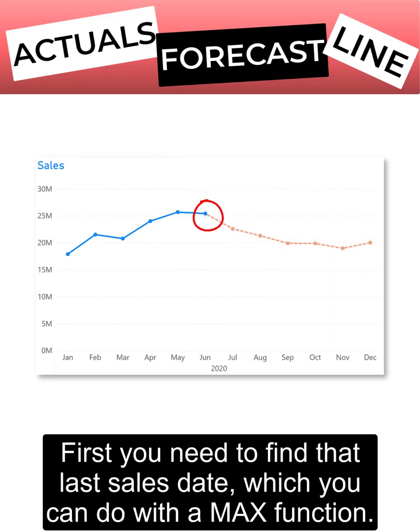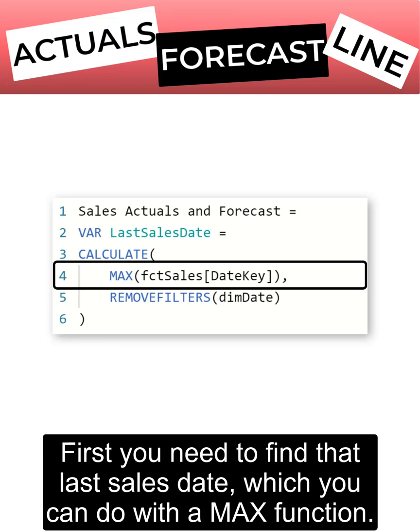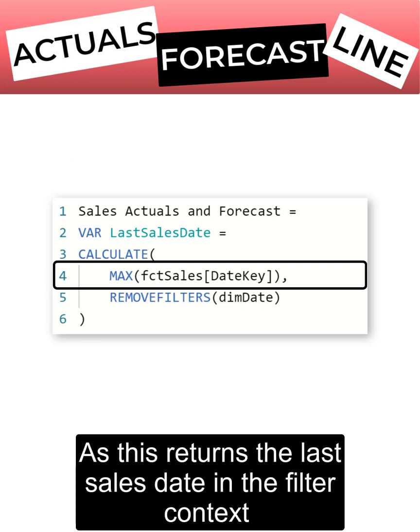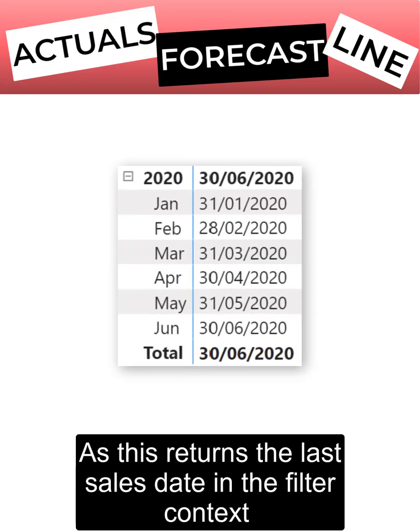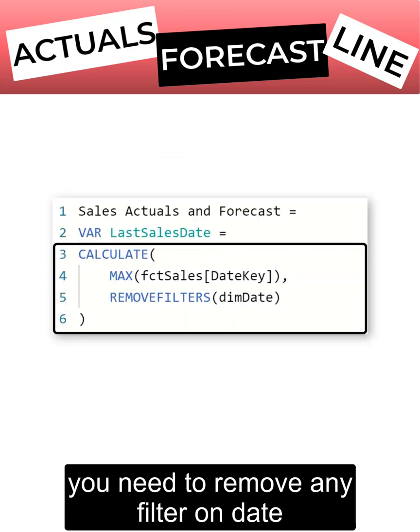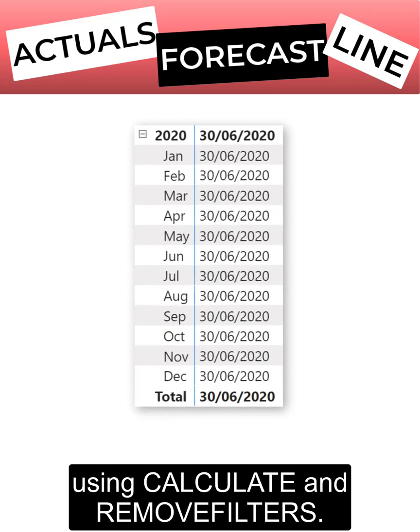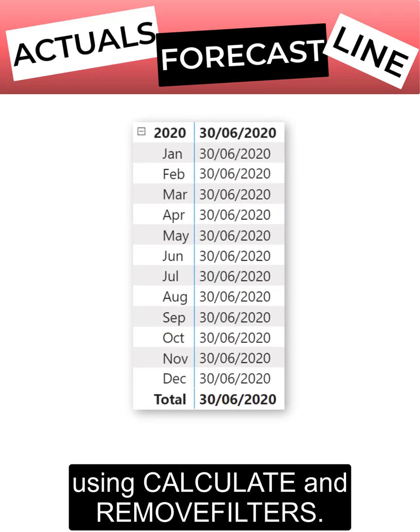First you need to find that last sales date, which you can do with a MAX function. As this returns the last sales date in the filter context, you need to remove any filter on date using CALCULATE and REMOVEFILTERS.